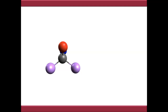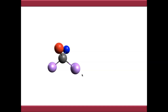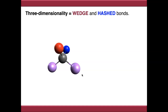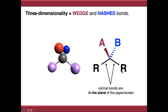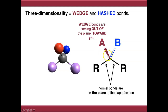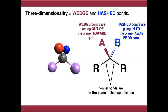Another issue with single-bonded carbon is how to accurately represent a three-dimensional shape on a two-dimensional surface. We deal with three-dimensionality using wedge and hash bonds. Regular bonds are considered to be in the plane of the paper. The wedge bond is coming out of the plane towards you, whereas the hash bond is going into the plane away from you. So A is the red atom coming towards you, and B is the blue atom going away from you into the plane.